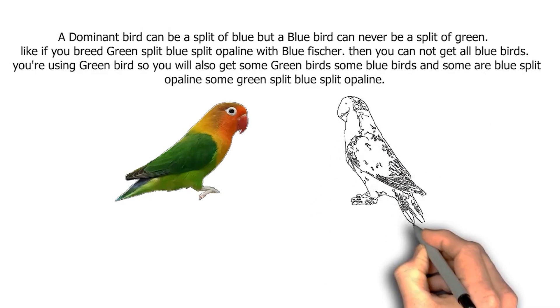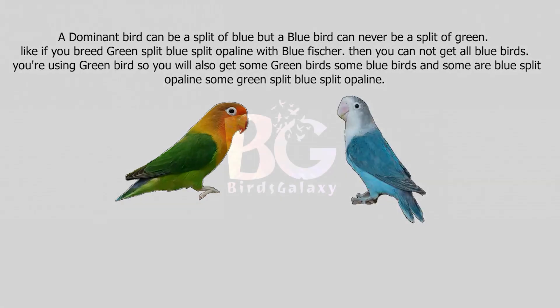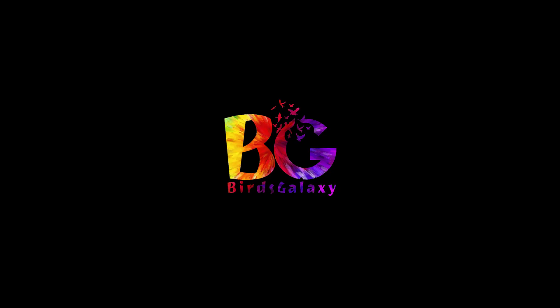In every mutation — if you use green Opaline, green New Wing, Opaline green, Pale Fallow green, or New Wing with a blue bird — then you'll get all green birds. This is the difference between dominant and recessive mutation. I hope you guys now understand. Thank you.